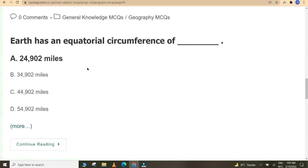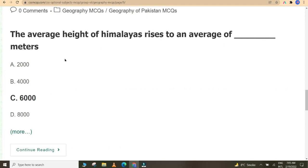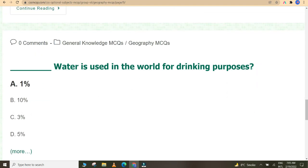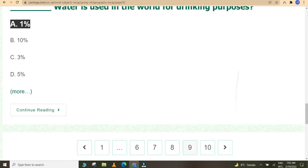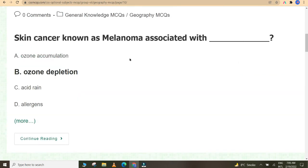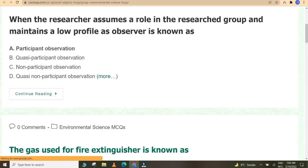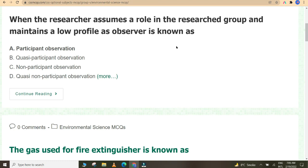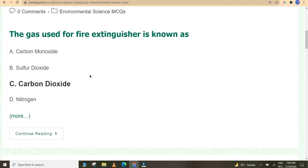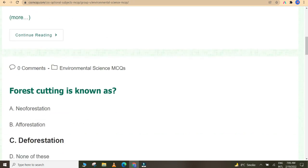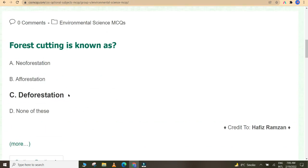Earth has equatorial circumference of 24,902 miles. The average height of Himalaya rises to an average of 6,000 meters. 1% of water is used in the world for drinking purposes. Skin cancer known as melanoma is associated with ozone depletion. When the researcher assumes a role in the research group and maintains a low profile as observer, it is known as participant observation. The gas used for fire extinguisher is carbon dioxide. Forest cutting is known as deforestation.